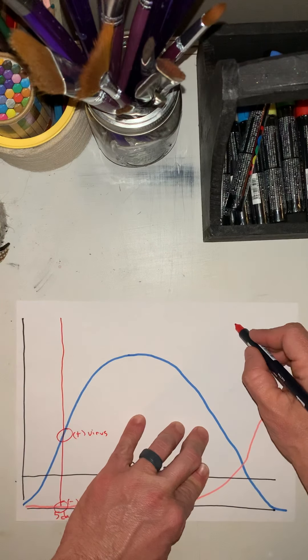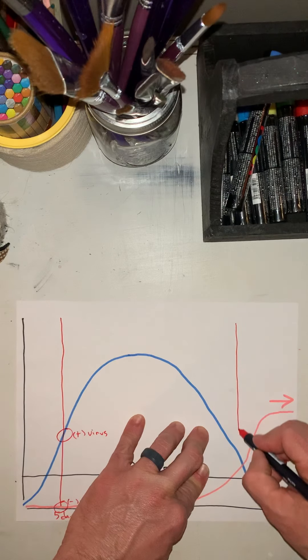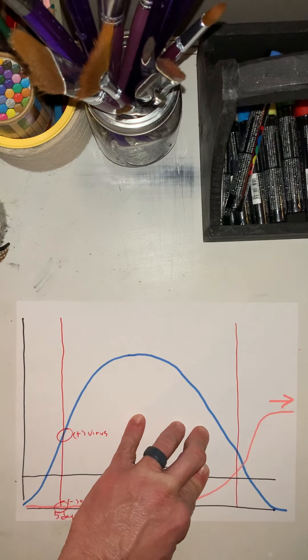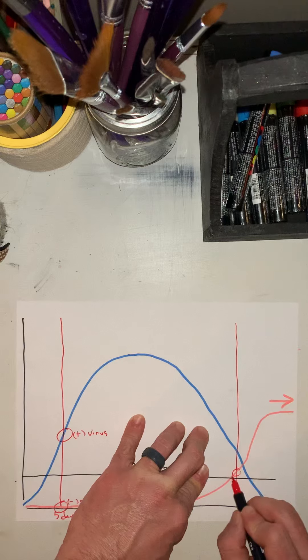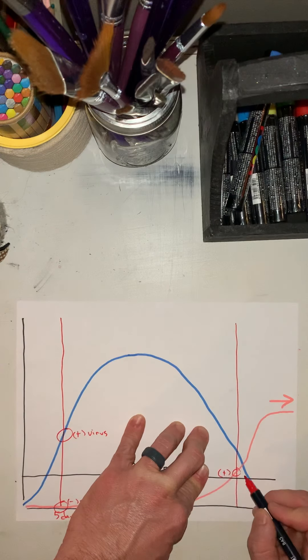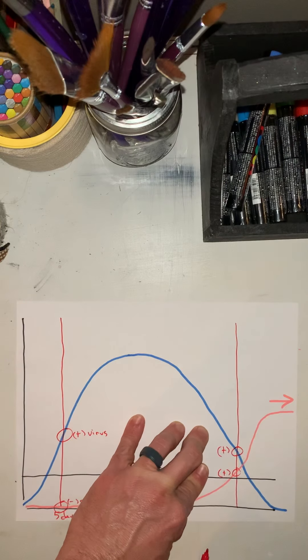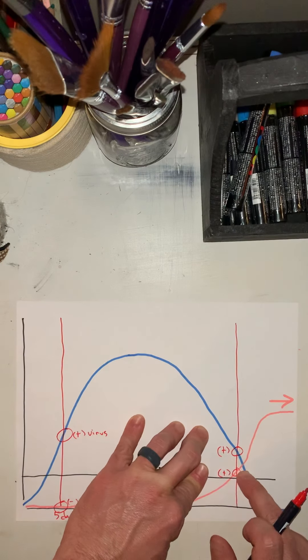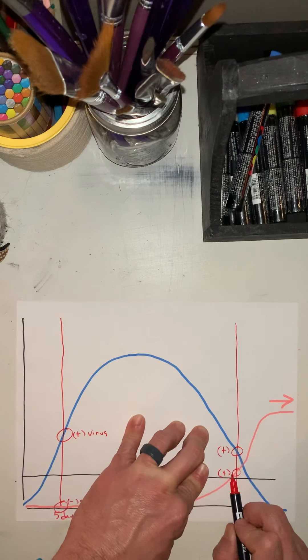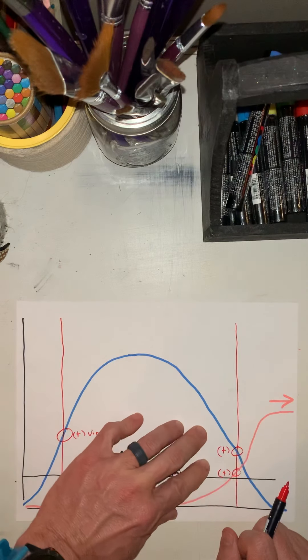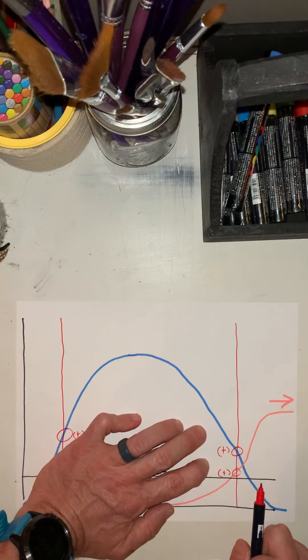Now, let's draw a testing line at this point. At this point, you're going to be positive for the antibodies. You're also going to be positive for the virus. This is an important point, because just because you have a positive on the antibody test does not mean that you're negative for the virus.